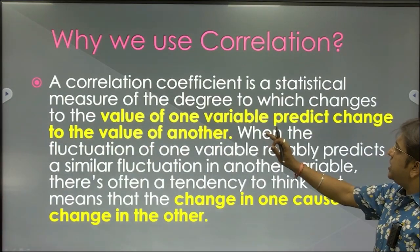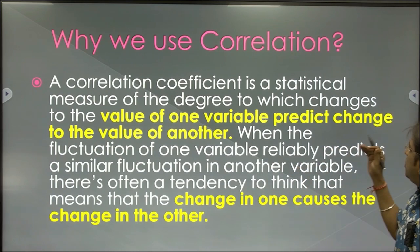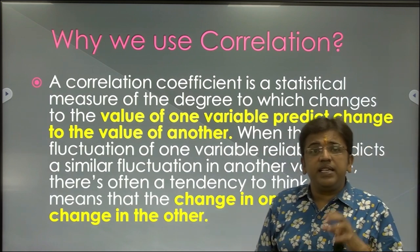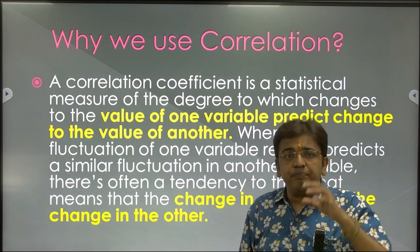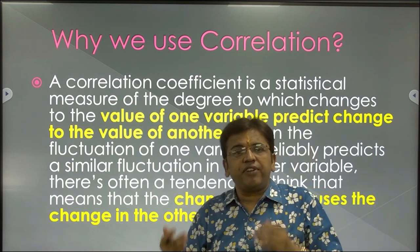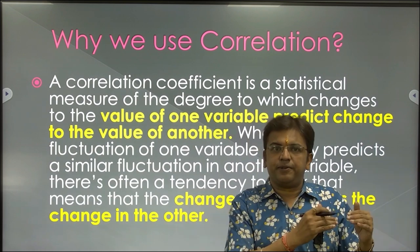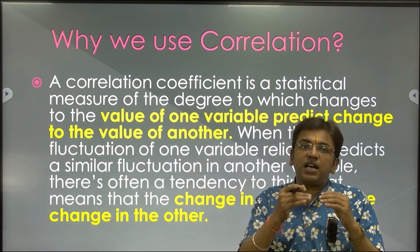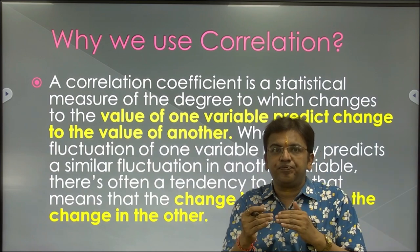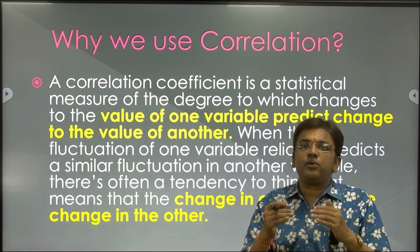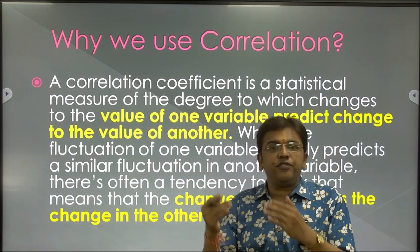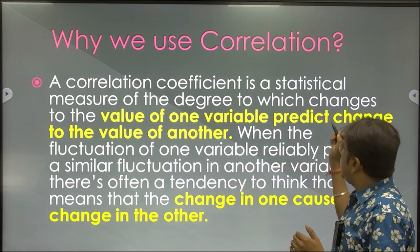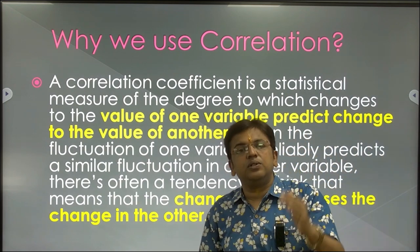Why do we use correlation? A correlation coefficient is the statistical measure of the degree to which changes in the value of one variable predict change in the value of another variable — meaning how much one value has an impact on another value. For example, you can find the impact of oil on the growth of hair: how much oil you are using and what is the growth of your hair. This is directly related.